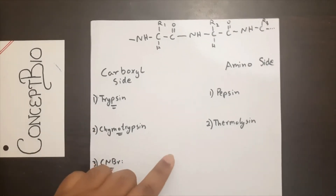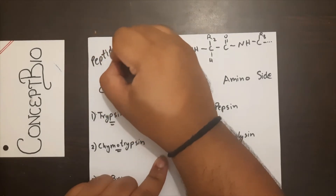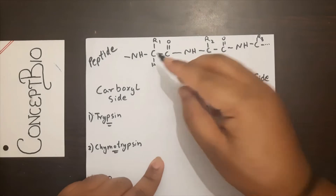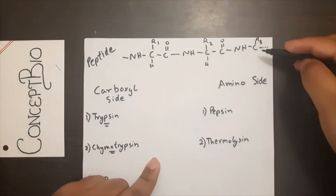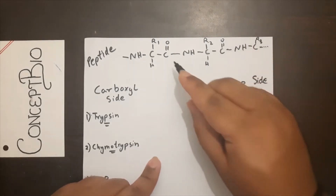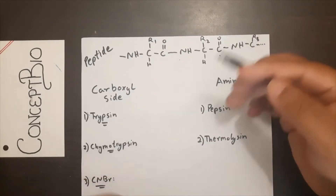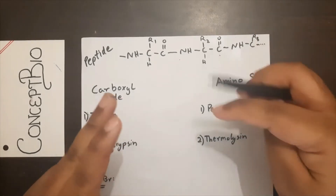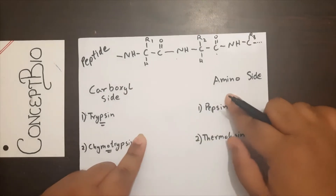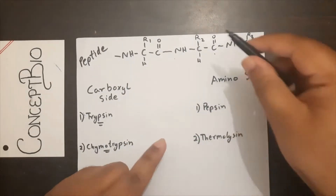Suppose this is a peptide bond. This is your peptide sequence: R1 is for your first amino acid, R2 is for your second amino acid, and R3 is for your third amino acid. Now, for every amino acid it has an amino terminal and a carboxyl terminal. Based on this, proteolytic enzymes can be classified into two groups: those that cleave the carboxyl side, and those that cleave the amino side.